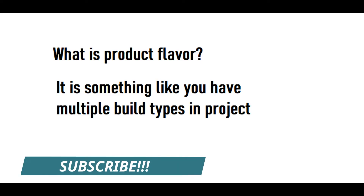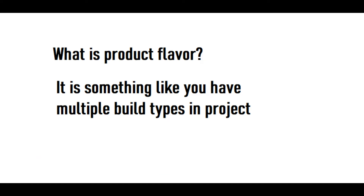In this video we will be learning how to implement product flavors in our Android app. A product flavor is something like having multiple build types in a project. For example, you want to create a project which has two variants — one should be a free version and the second is a paid version. You have two options: either create two separate projects for both versions, or you can use product flavor.